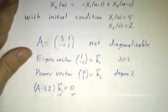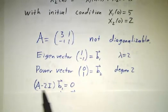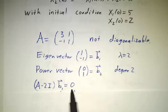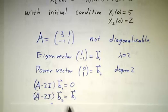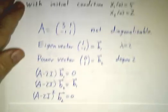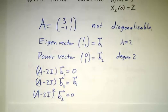So if you multiply the eigenvector by A minus twice the identity, you get 0. You multiply the power vector by A minus twice the identity, you get the eigenvector. And if you multiply it by A minus twice the identity again, you get 0.